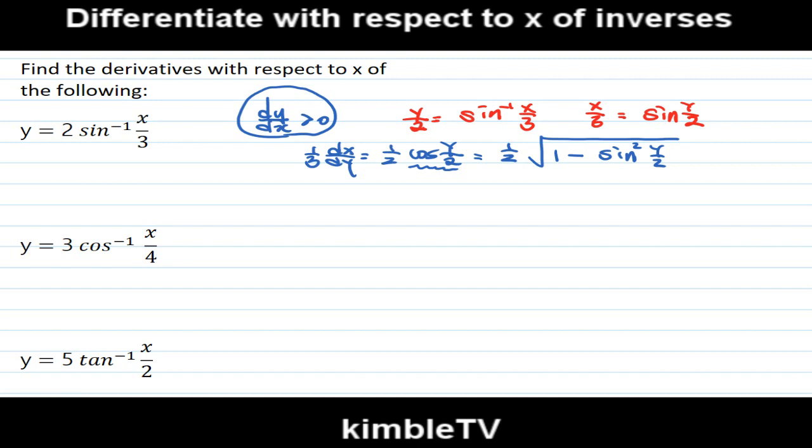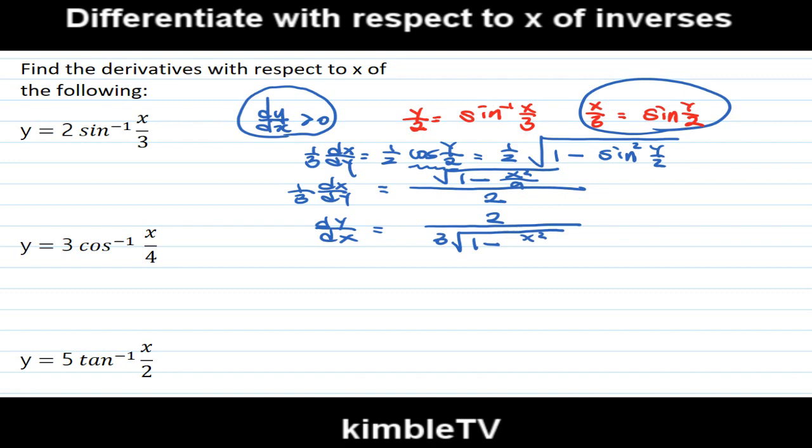Just 1/2. Okay. √(1 - sin²(y)) is the same as √(1 - x²/9). So 1/3 dx/dy = 1/2 √(1 - x²/9).